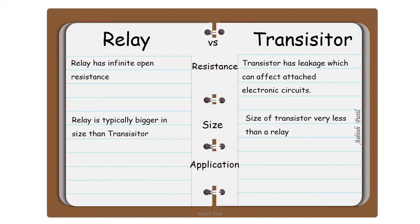Applications. Relay can be used only to open and close circuits. Transistor can amplify analog signal and also use as a switch.